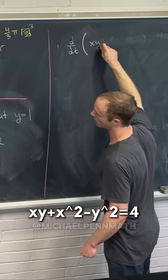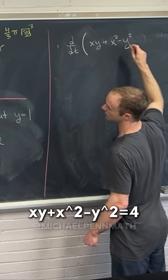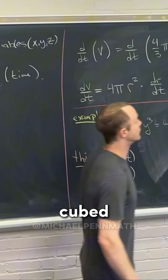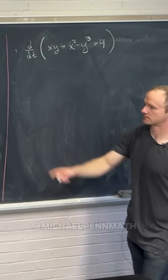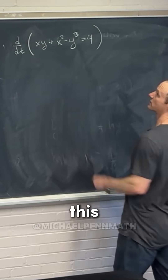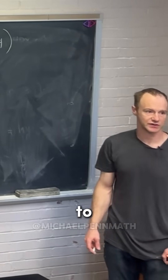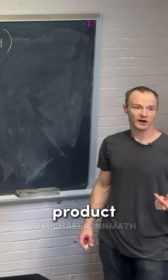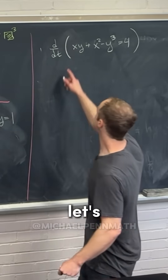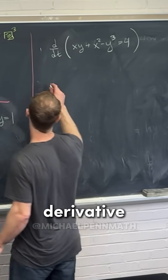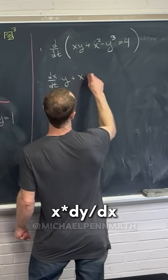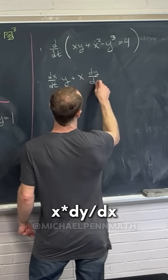We have xy plus x squared minus y cubed equals 4. To this first term, x times y, we have to use the product rule, because we've got a product of two functions, x and y. So if we take the derivative of x first, we get dx/dt, multiply that by y, and then add x times the derivative of y, dy/dt.